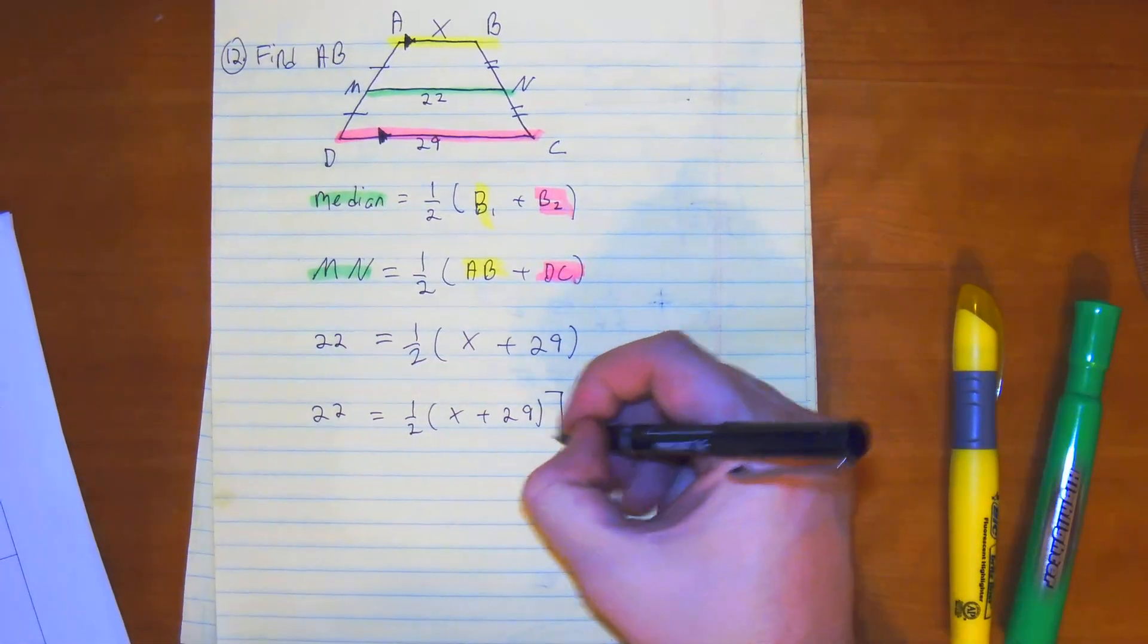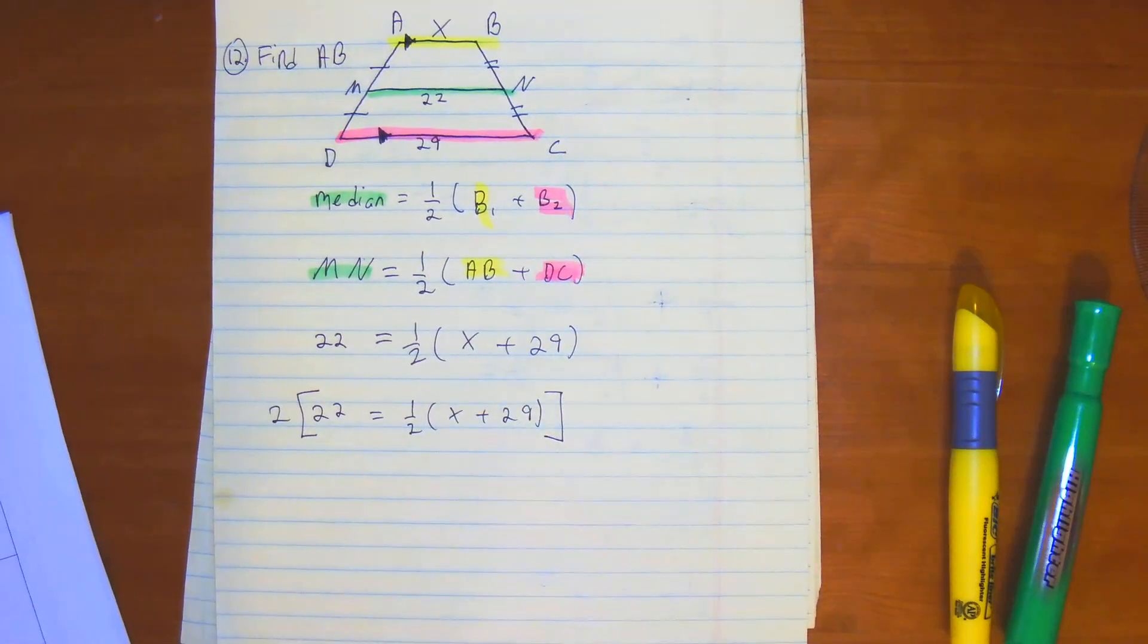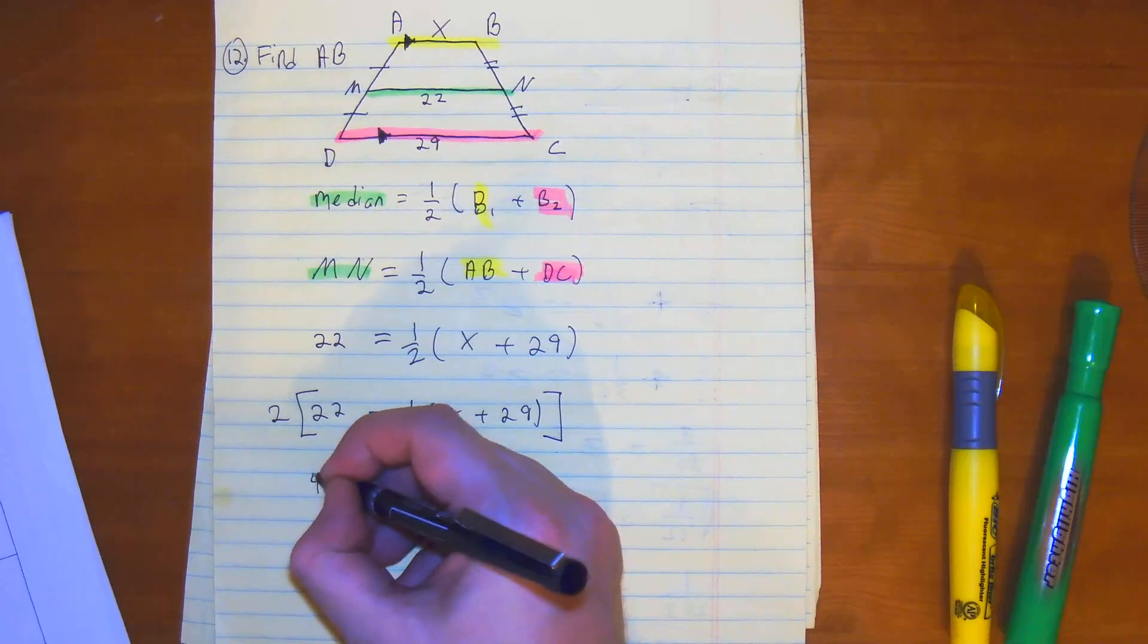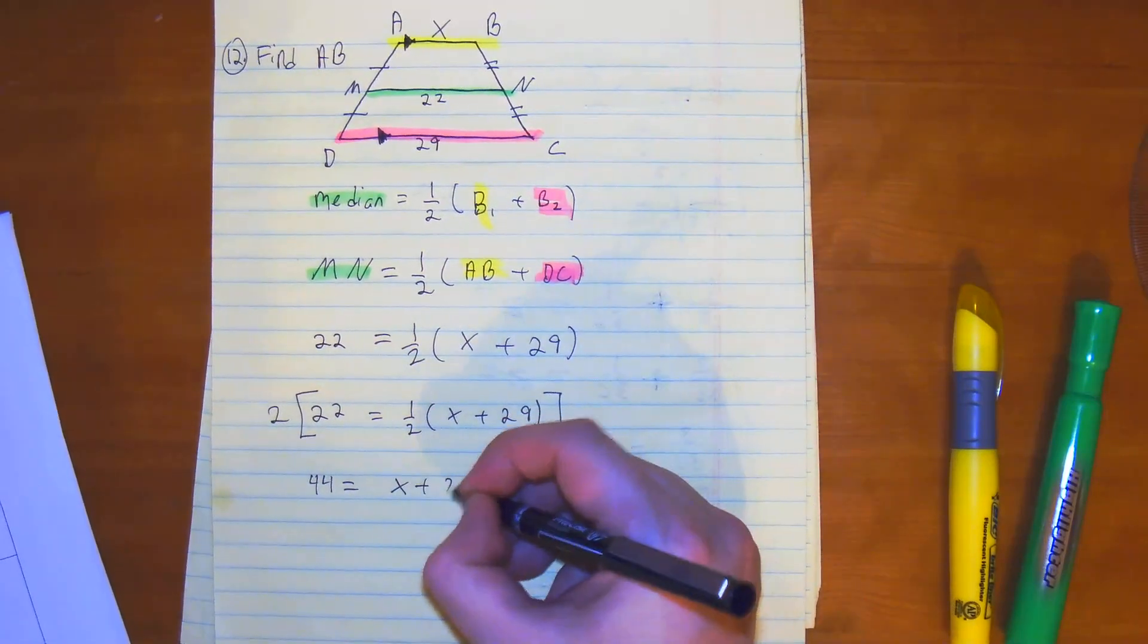So first, we're going to multiply this whole thing by 2, and that will cancel that half out. So then we get 44 is equal to X plus 29.